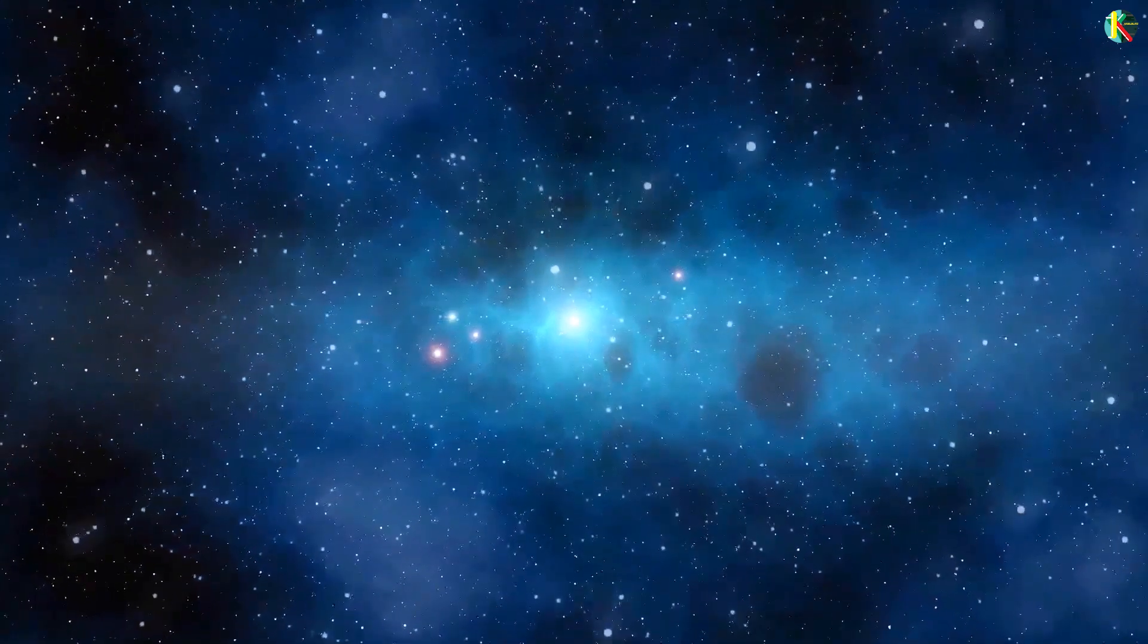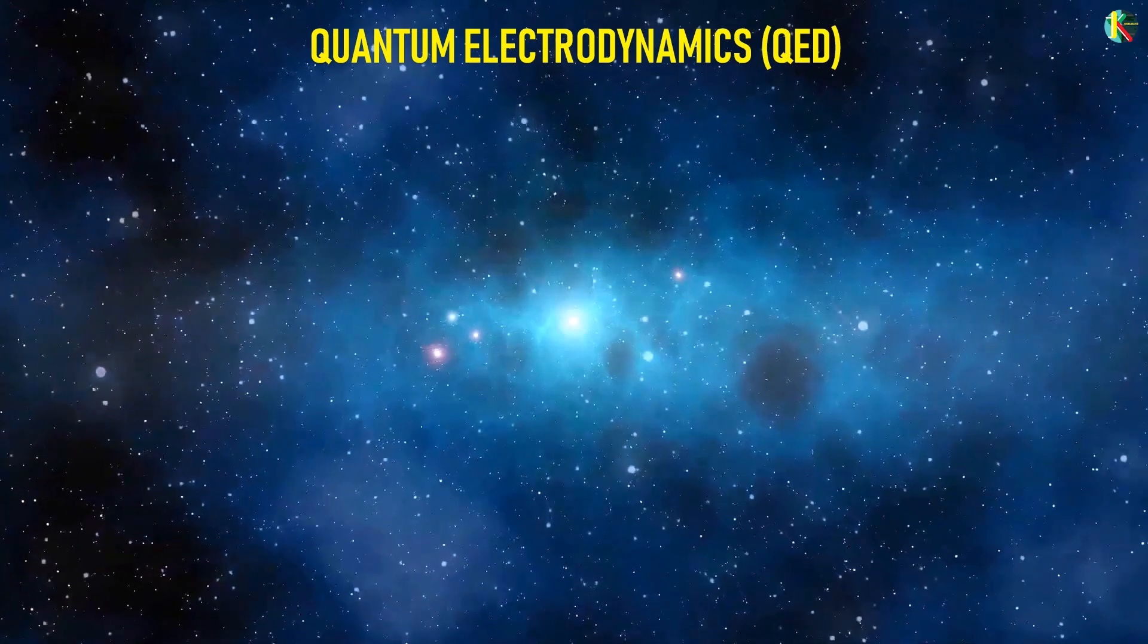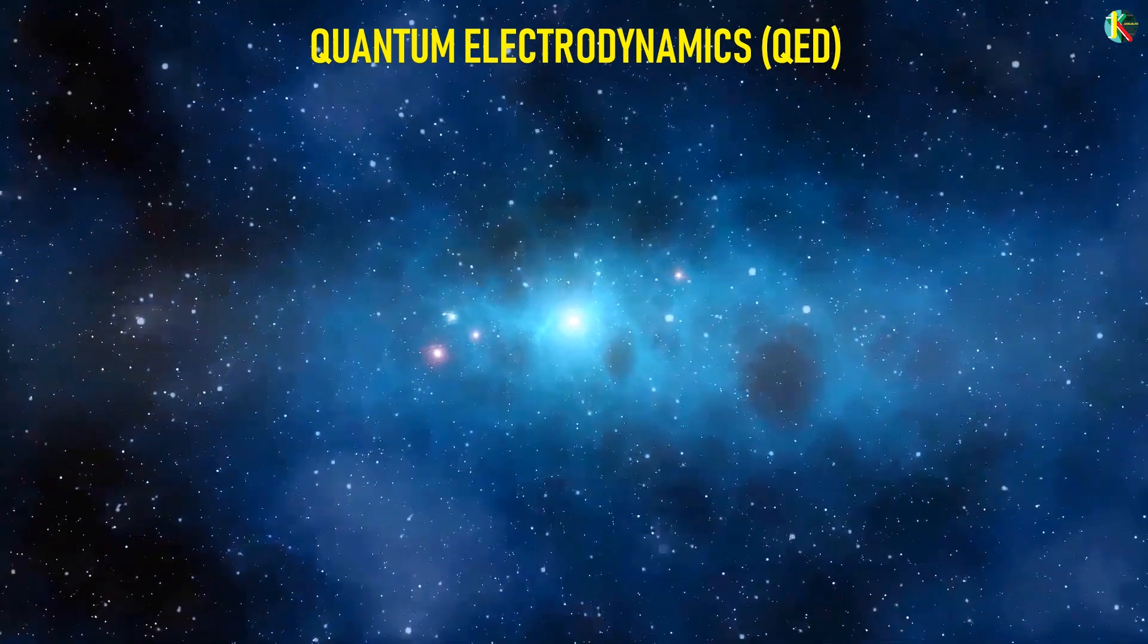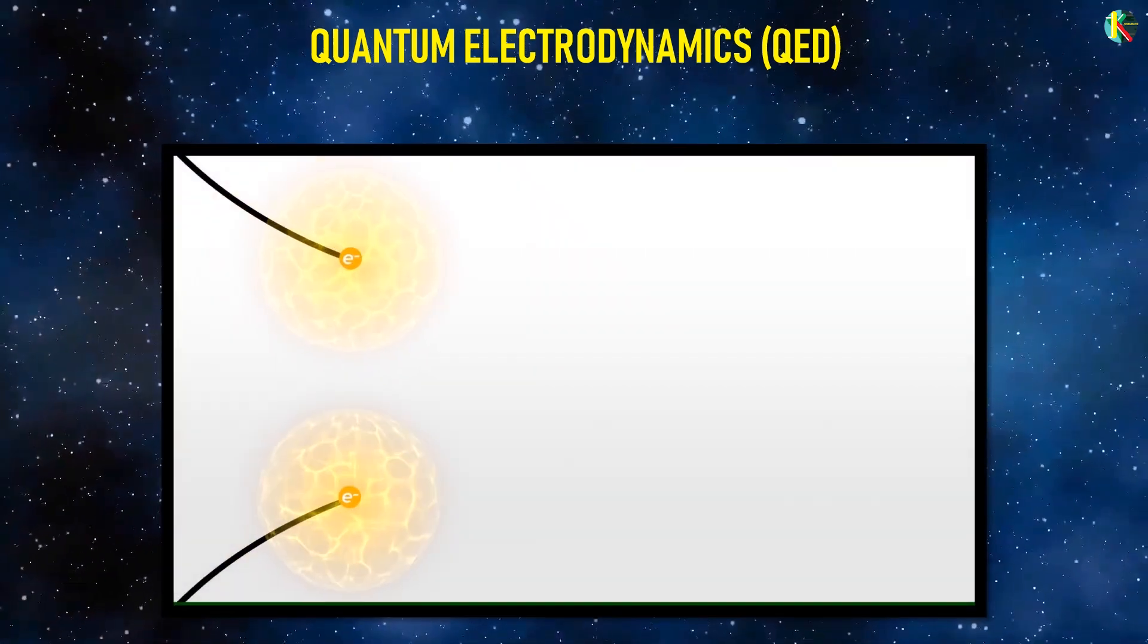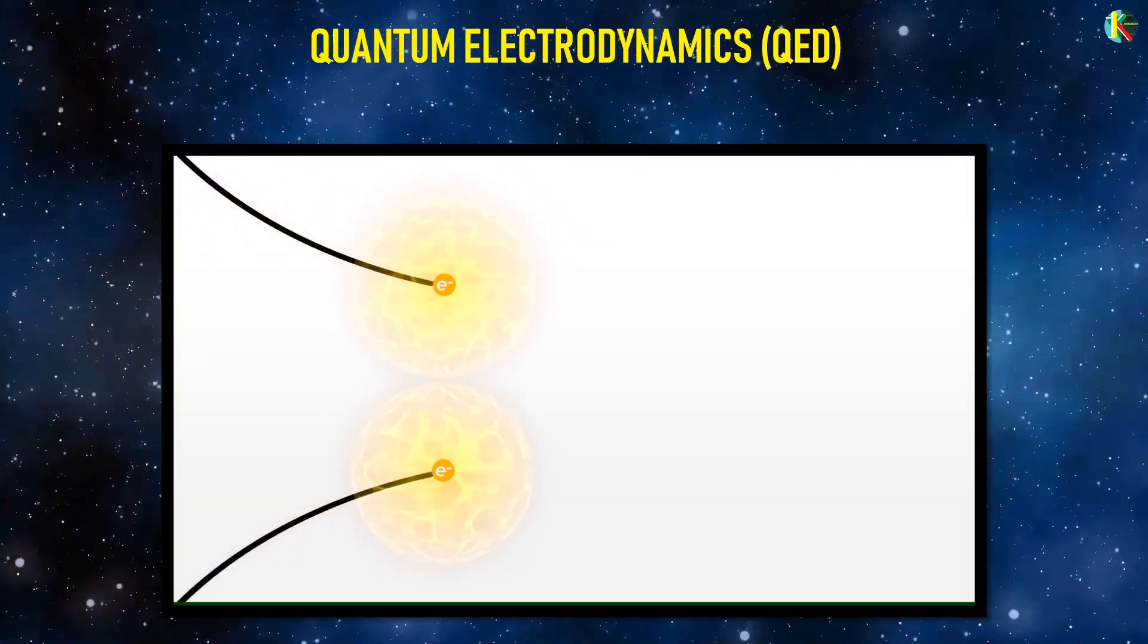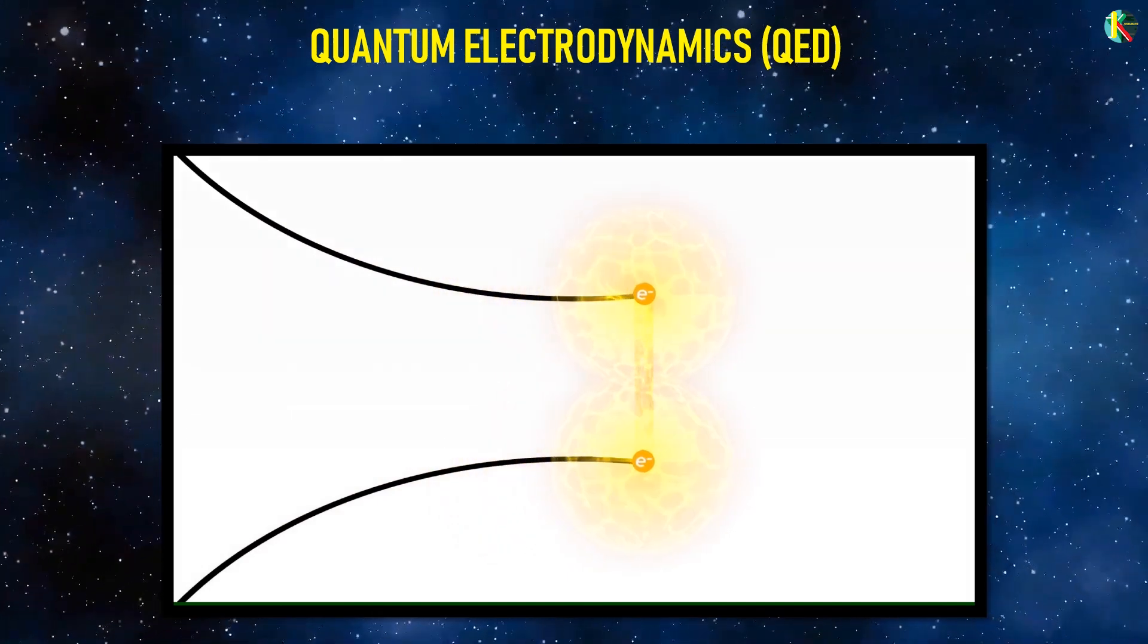To understand the Feynman diagram, let us use an example. We are going to use quantum electrodynamics, which is the first and the predictably most powerful quantum field theory. QED talks about the interaction of the electron field and the electromagnetic field, which means interactions between electrons, positrons and photons.